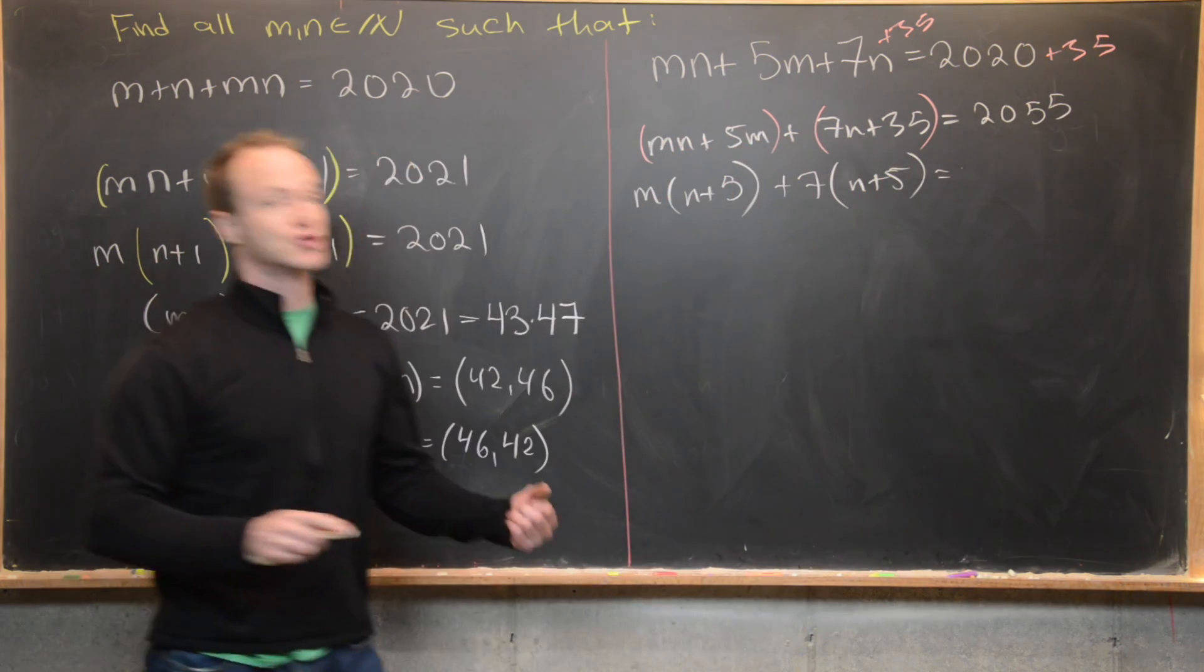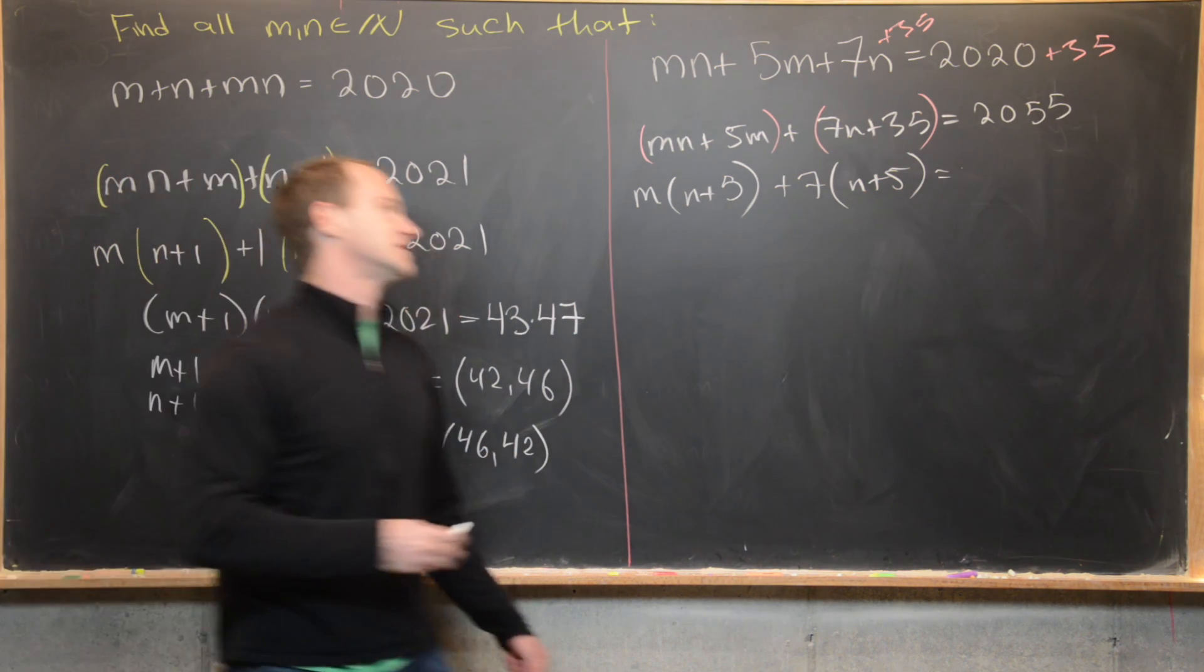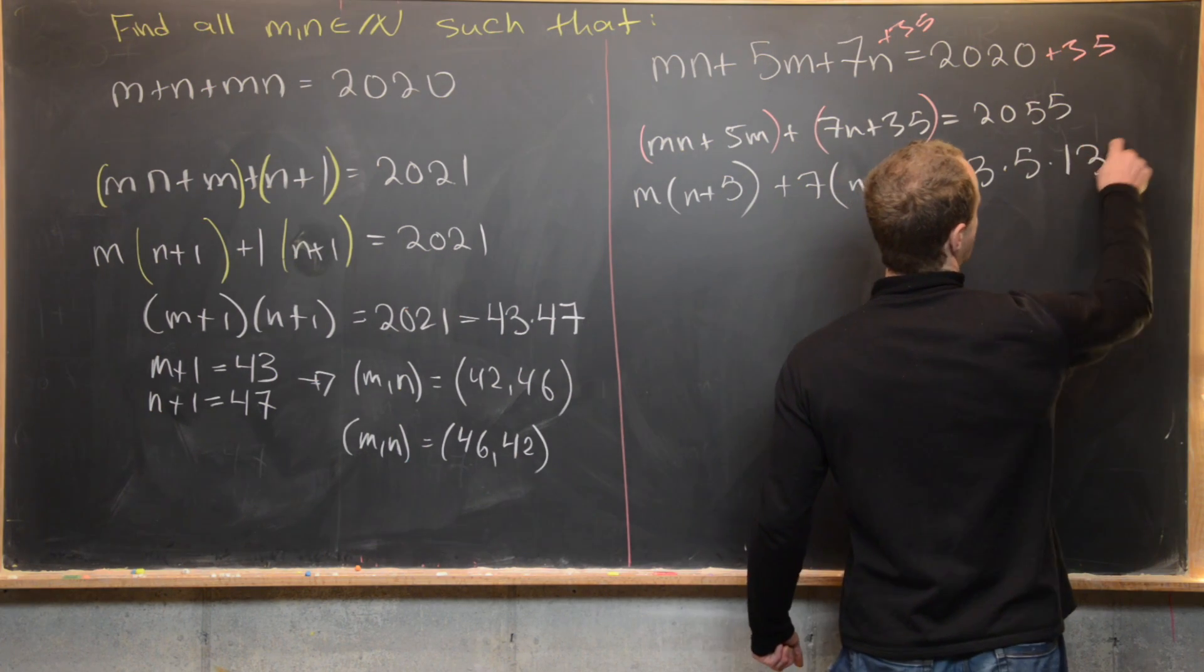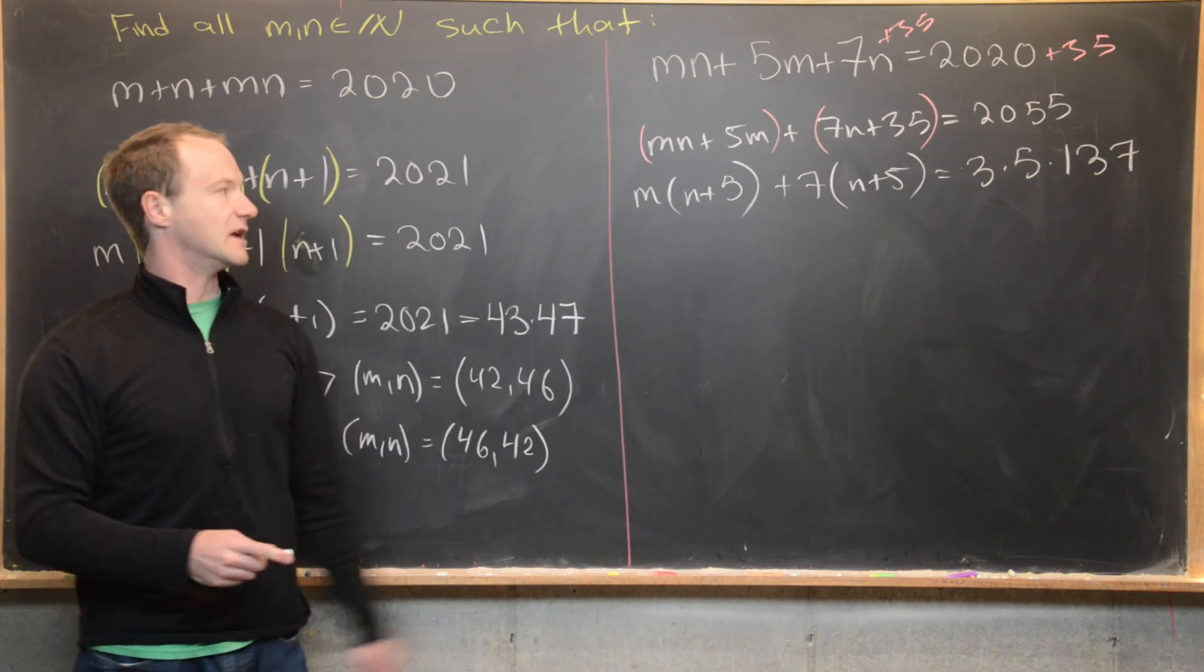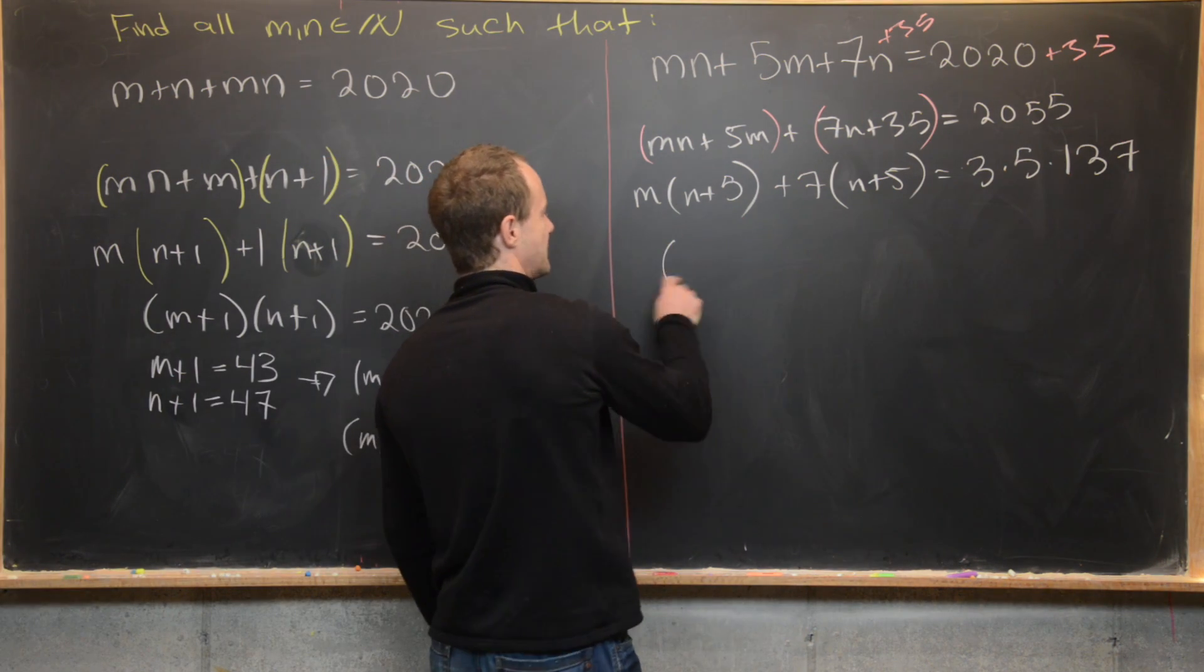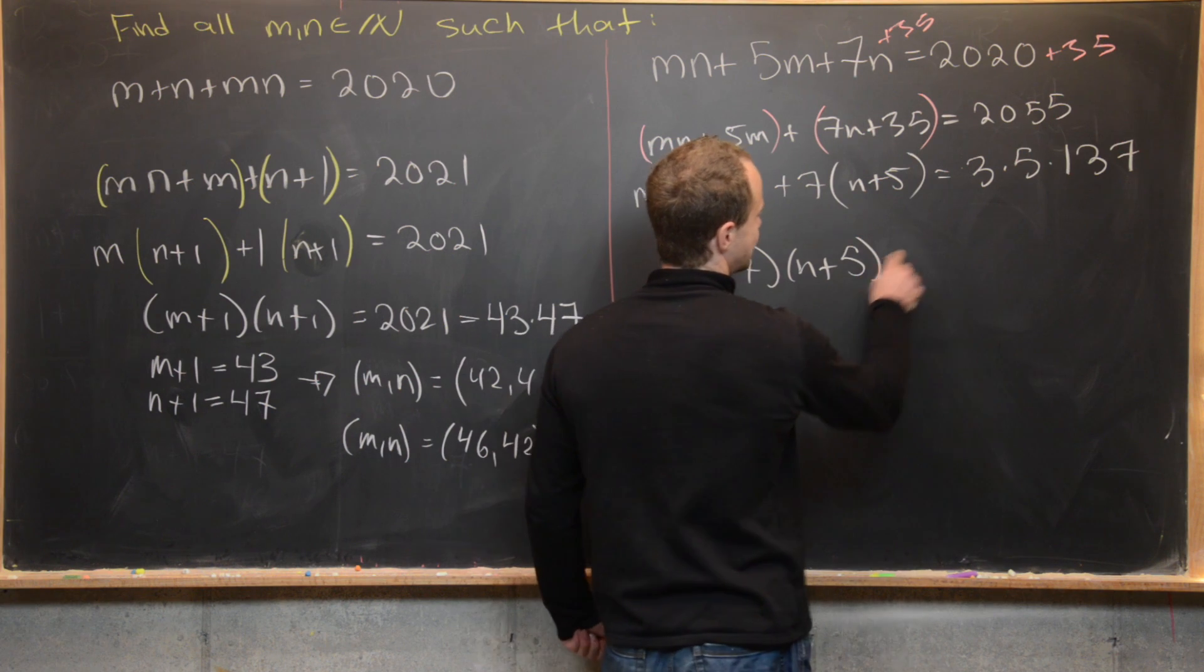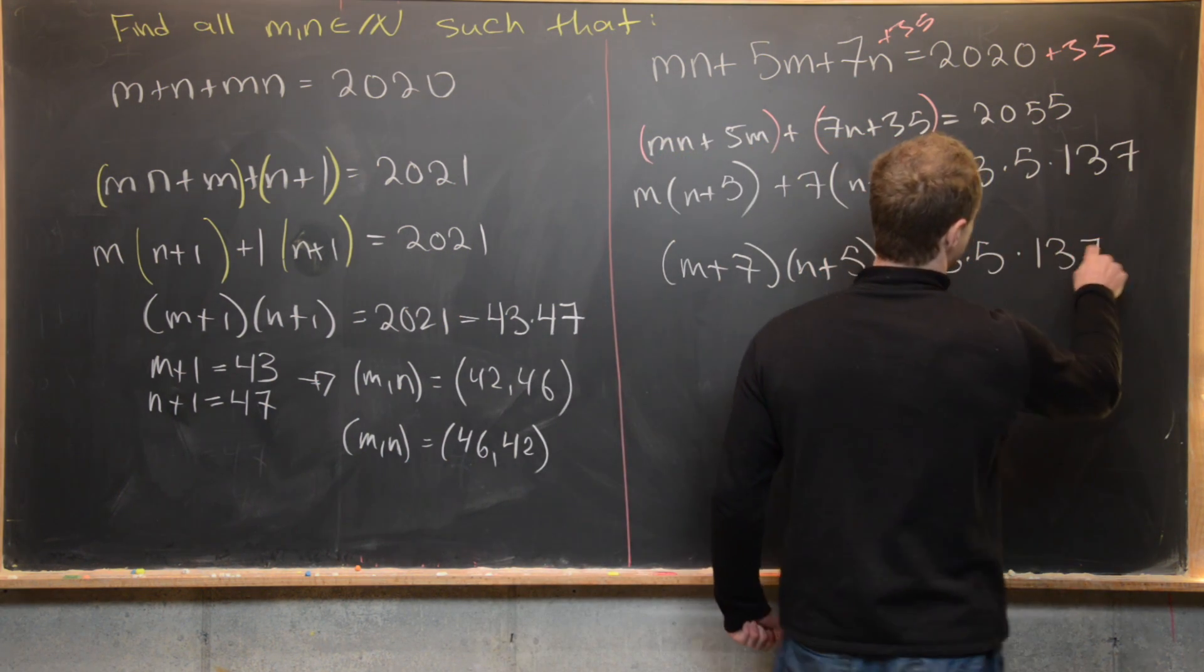And now I can factor 2,055 as a product of primes. So that's going to factor like 3 times 5 times 137. Okay, then furthermore I can factor this left hand side, the n plus 5 out. That'll give me (m plus 7) times (n plus 5) equals 3 times 5 times 137.